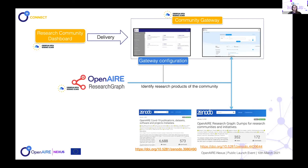Thanks to the gateway configuration, we are able to discover which products are relevant for the community, and these are made available on the portal and on dedicated dumps on Zenodo. We have one dedicated dump for the COVID-19 community, and other research communities have their content in another specific dump.